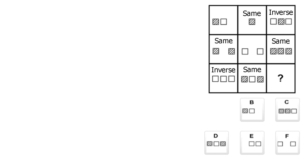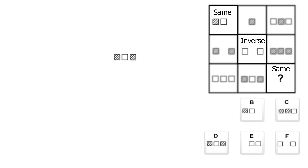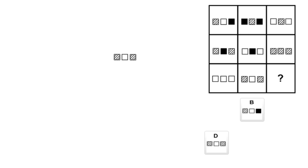Looking at the bigger picture, the inverse pictures are in the main diagonal from top right to bottom left, so the red diagonal should follow a same-inverse-same pattern. The answer will have the same left square as the first picture — striped — the same middle square — white — and the right square opposite to the second picture — striped. This eliminates answers C, E, and F, leaving either answer B or answer D. However, since I couldn't determine the pattern of the black squares, I couldn't identify which one was correct and put the puzzle aside.